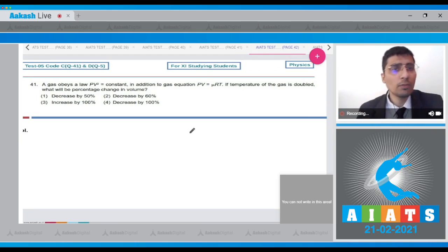In question 40, when a gas obeys law PV² equals constant in addition to the equation PV equals μRT, if the temperature of the gas is doubled, what will be the percentage change in the volume?